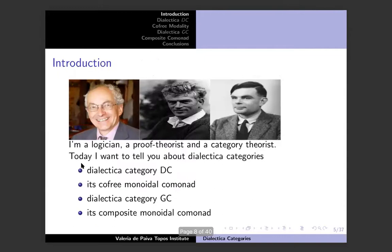Very recently, I had someone I think is a very bright proof theorist tell me that he actually read my thesis when he was starting his PhD, and that it convinced him to do categorical proof theory. I was very pleased and moved by this. I thought it was best not to ask whether it was because it was such a piece of rubbish that he said he could do better, or if he actually liked it so much that he decided to do it.